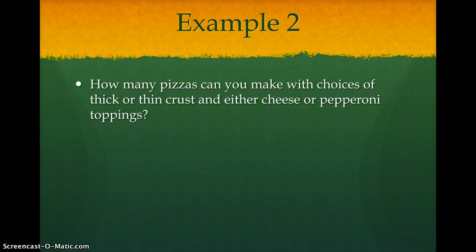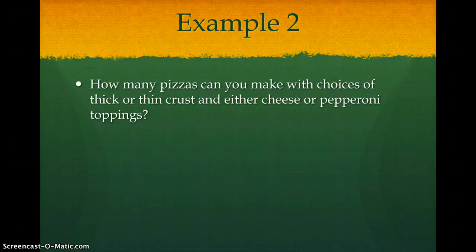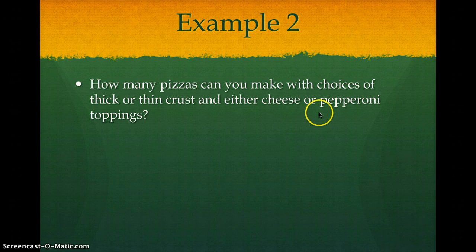Let's look at another example. It says, how many pizzas can you make with choices of thick or thin crust and either cheese or pepperoni toppings? So on this one, you could do a tree diagram, but they don't really care what they are. I would just make a list or you could do it mathematically.